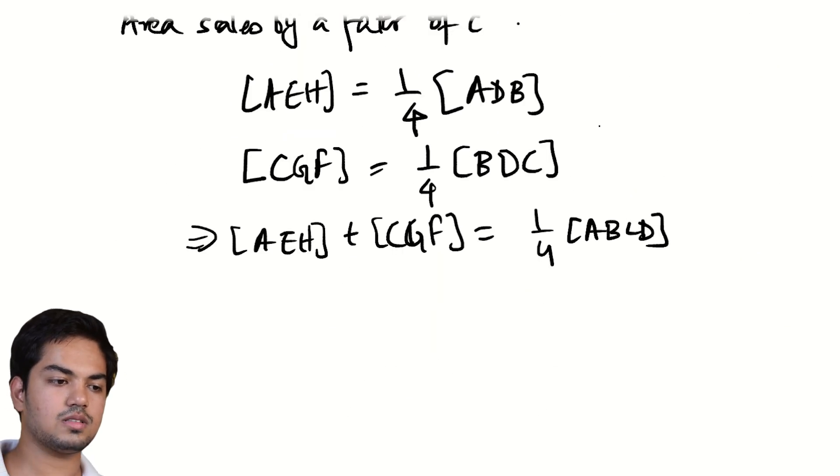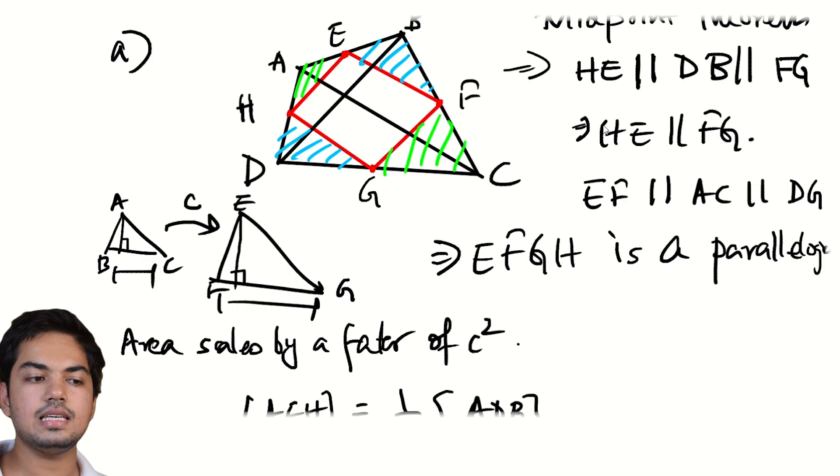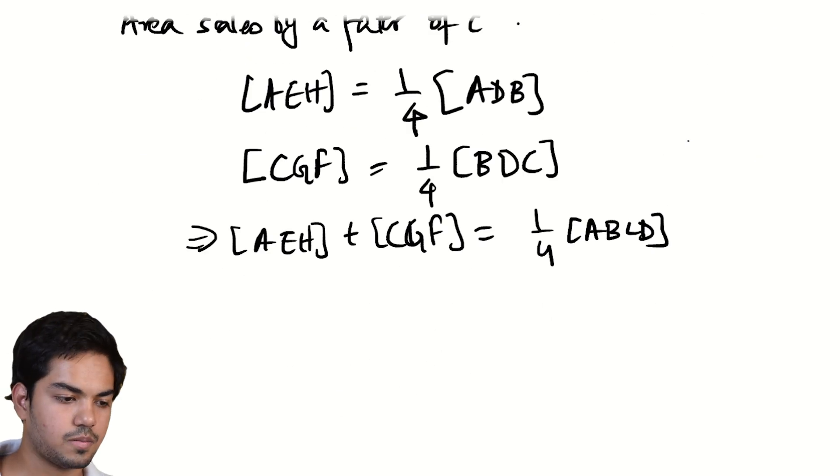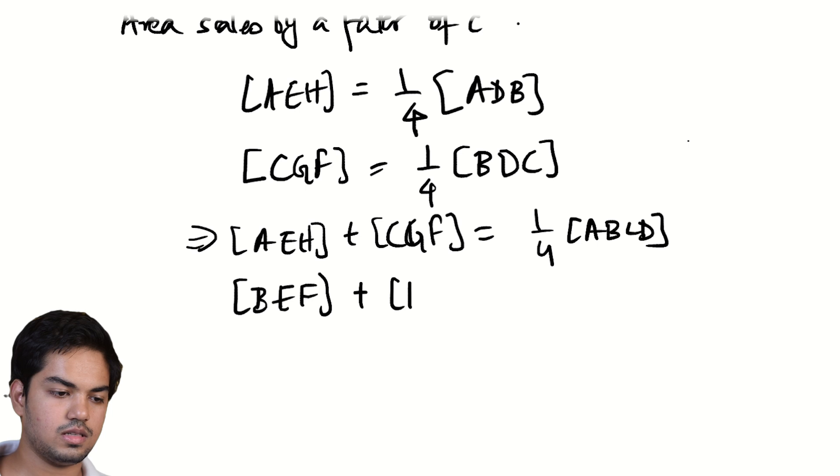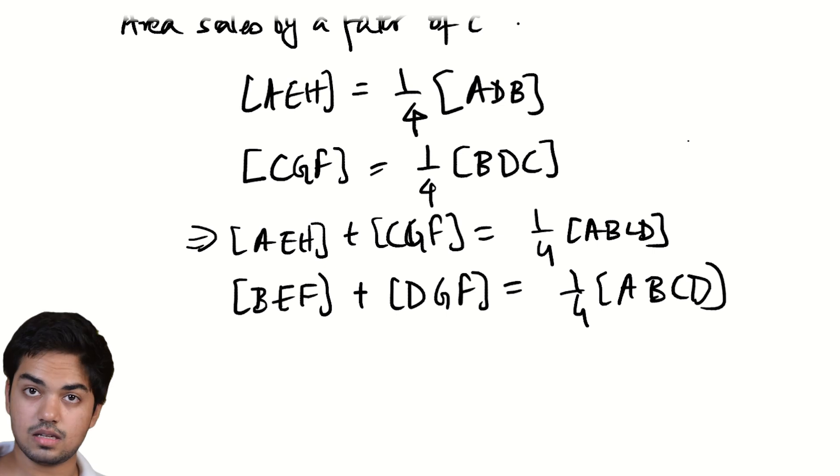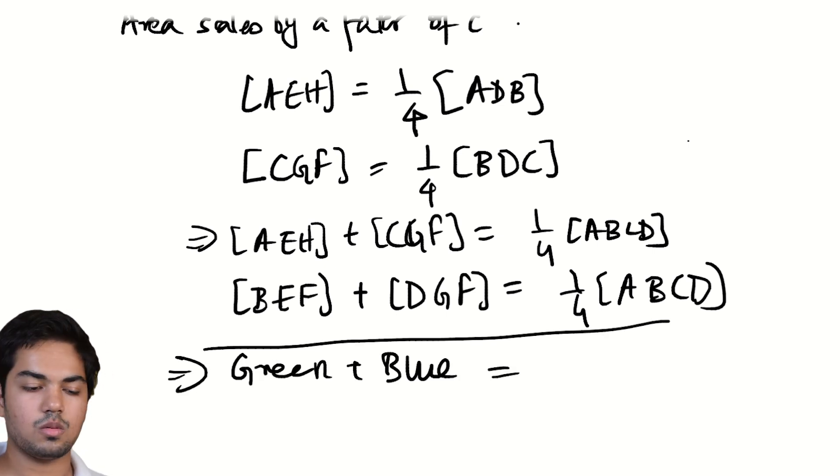So by very similar arguments, the area of BEF, this triangle, and DGH are also... BEF, DGH is also one fourth of ABCD. If I sum this entire thing, green plus blue regions, the sum of those areas is half of ABCD, one fourth plus one fourth.